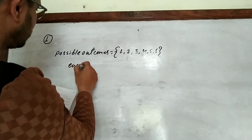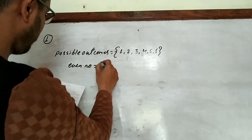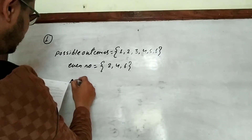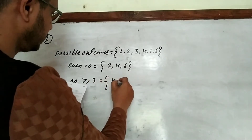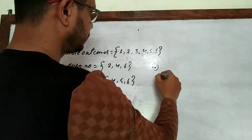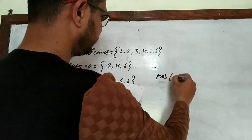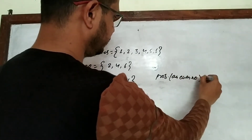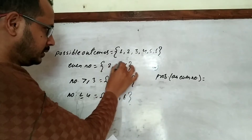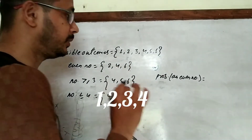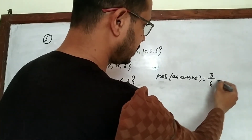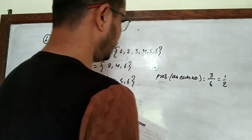For part (a), we need even numbers: 2, 4, 6. The number of favorable outcomes is 3 and the number of possible outcomes is 6, so the probability of getting an even number is 3/6 = 1/2.